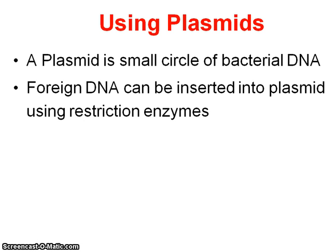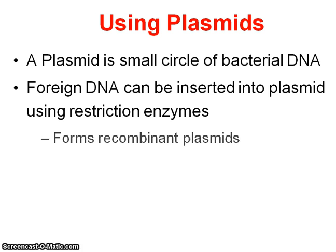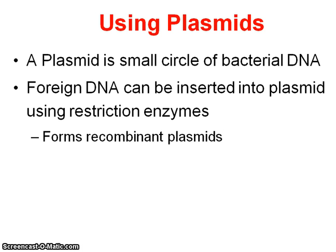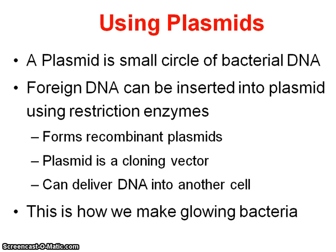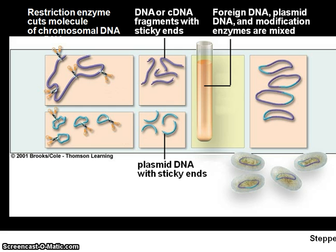That's their plasmids. Plasmids typically carry things like antibiotic resistance genes. So what we can do is open up a plasmid, put in the DNA we want, and then get the bacteria to take the plasmid back in again. This is called a recombinant plasmid — in other words, we've recombined the DNA. We can then put it into our bacteria and deliver that DNA into another cell. We can create viruses or bacteria that insert that DNA. But this is how we created our glowing bacteria.